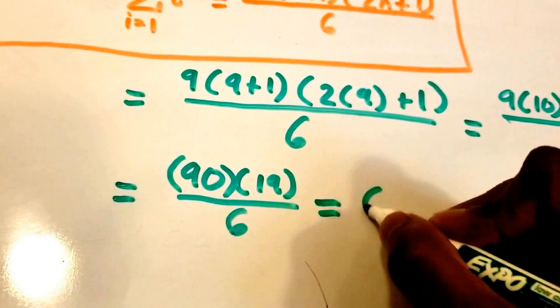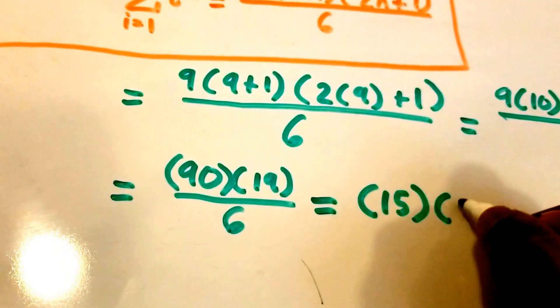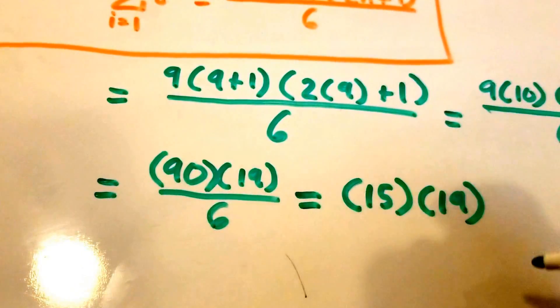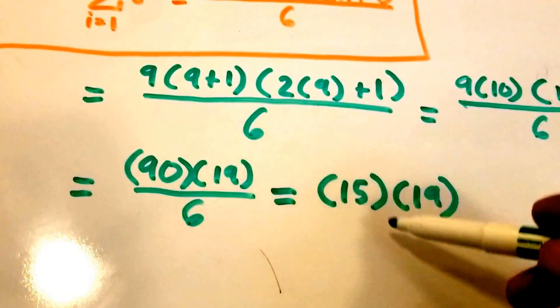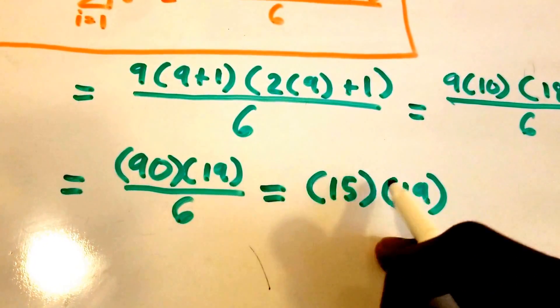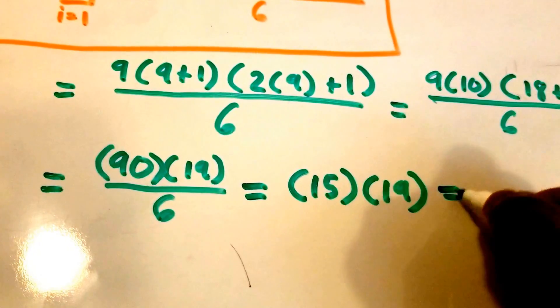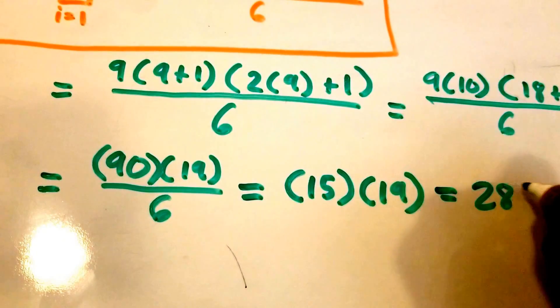So we're going to get 15 times 19, and then 15 times 19, if I'm doing the math right, I believe it's 285.